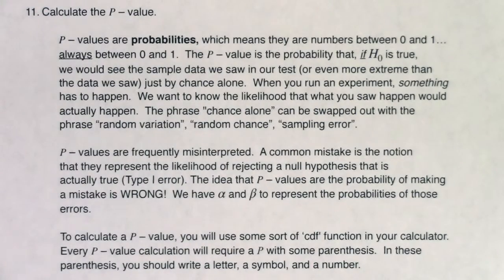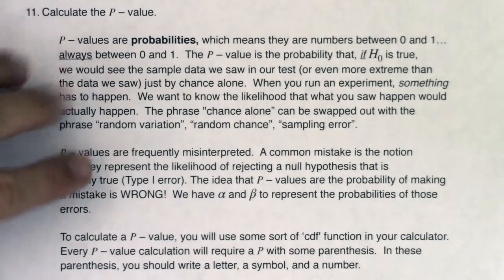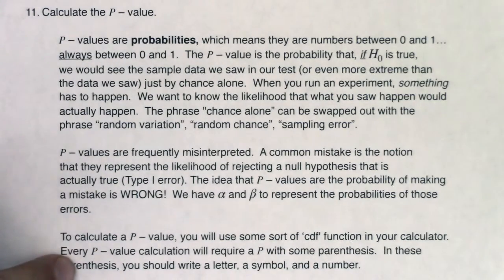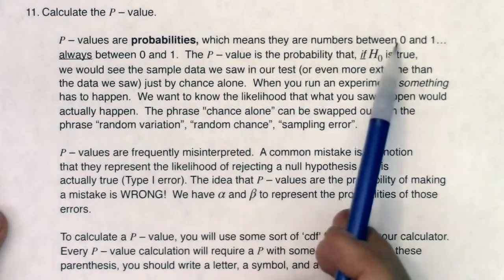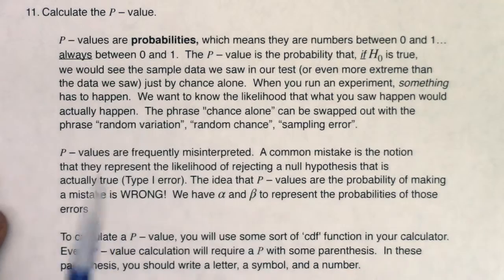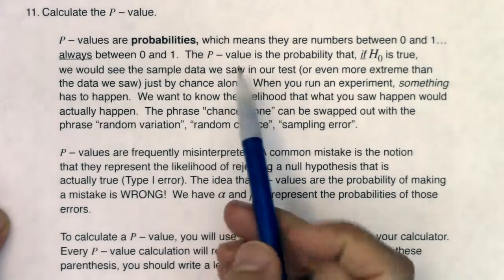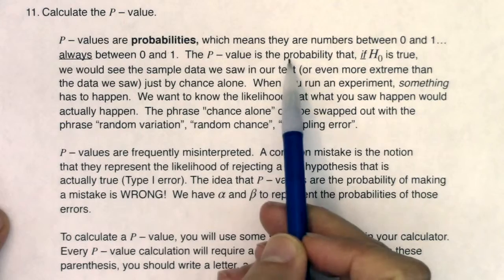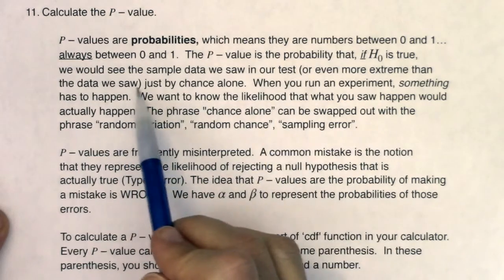Step 11 is calculating the p-value, and this is something students struggle with every semester — what is the p-value, how do I calculate it, what does it actually mean? P-values are probabilities, which means in step 11 you owe me a number between zero and one. The p-value is the probability that if the null were true, we would see the sample data we saw in our test, or maybe even more extreme, just by chance alone.